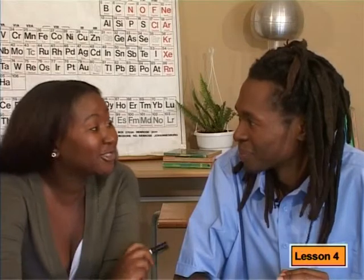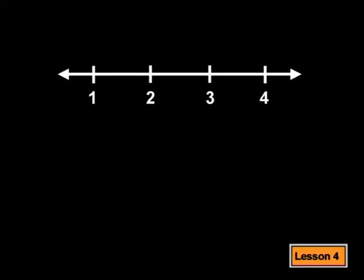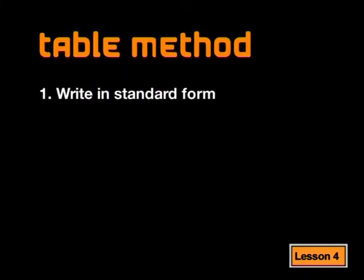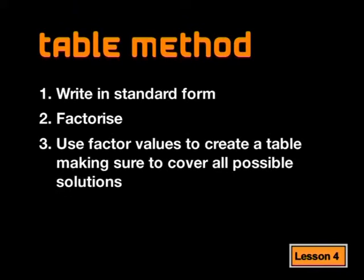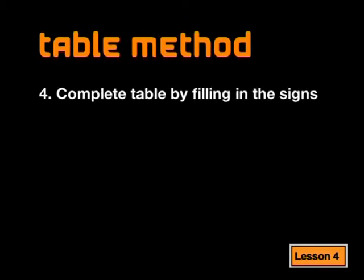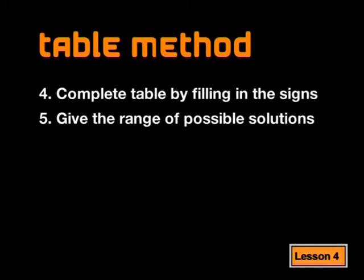Now, all we need to do is show our solution graphically on a number line. Let's quickly go over the steps one more time. First, we need to write the equation in standard form. Then we factorize. Once we have done this, we can use the factor values to create a table, making sure that we cover all the possible solutions. Next, we complete the table by filling in the signs. Lastly, we give the range of possible solutions.